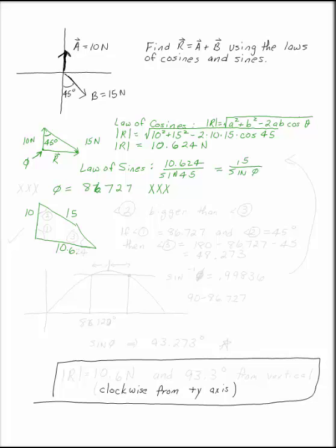15, and 10.624, the angle is opposite the bigger side. So this one has to be the biggest. This is the biggest. But this has to be bigger than this one. The angle opposite 10.6 has to be bigger than the angle opposite 10. So angle 2 has to be bigger than angle 3.